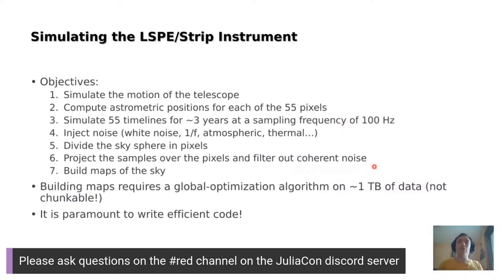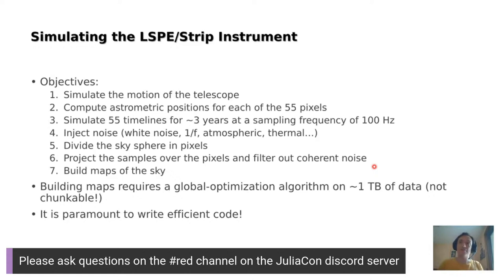This kind of simulation pipeline requires several parts. You have to simulate the motion of the telescope and Earth, compute astrometric positions for each sample acquired by each of the 55 receivers at a sampling frequency of 100 Hz, simulate the noise, pixelize the sky sphere, and run the mapmaker, which converts timelines into a sky map. Mapmaking is a global optimization problem requiring processing roughly one terabyte of data without the possibility to split the job in chunks — all data must be kept and processed in memory at the same time.